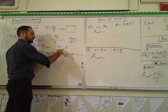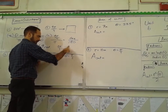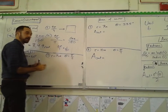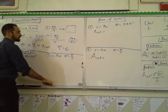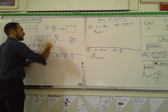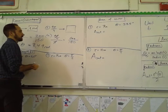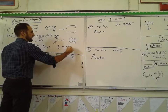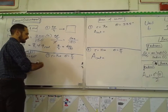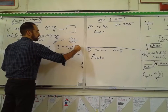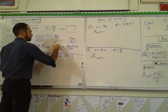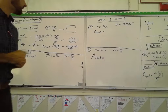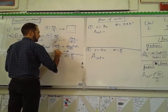We can convert division of fractions to multiplication by flipping the second fraction, which cancels the π. So 9/4 equals degree measure over 180. Multiply both sides by 180 to get the degree measure: 45 times 9 equals 405 degrees.